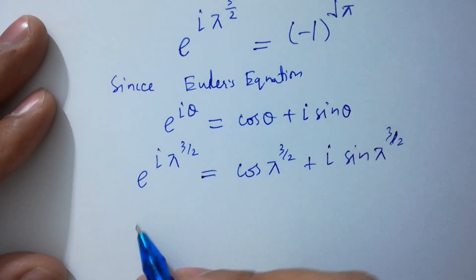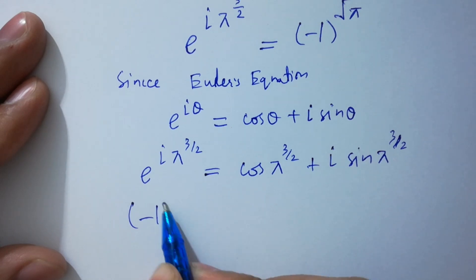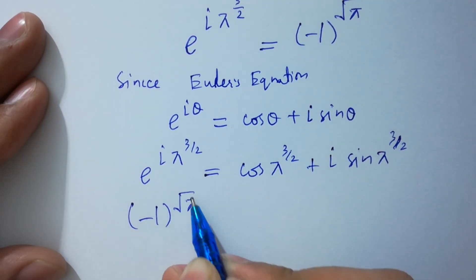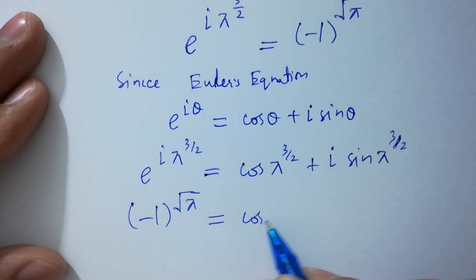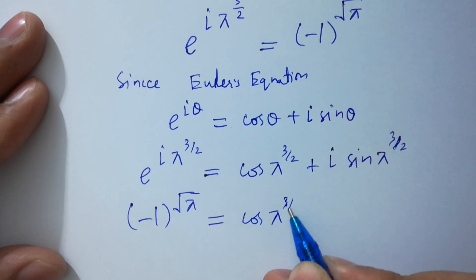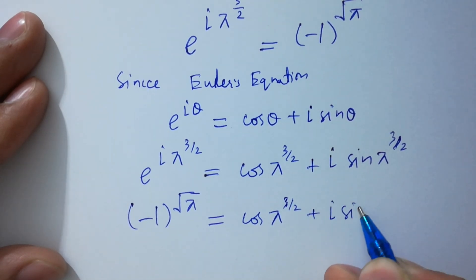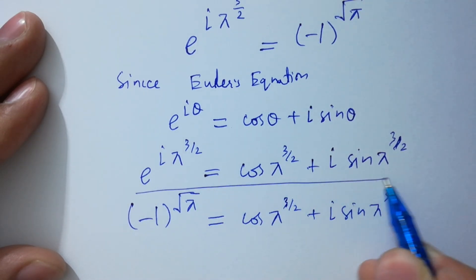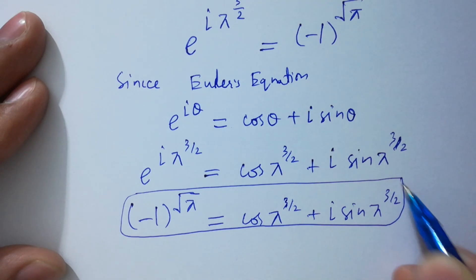So finally, minus 1 to the power square root of pi equals cosine of pi to the power 3/2 plus i·sine of pi to the power 3/2. This is our final answer.